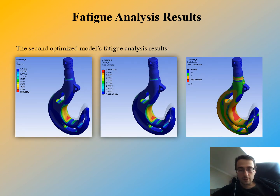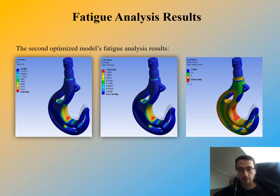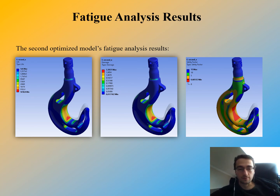The second optimized model's results are similar to the first one. Its life is less than the standard model, and because of that, its damage value is bigger than 1 and the safety factor is less than 1. This means it will fail before the design life of 17,000 cycles is reached.